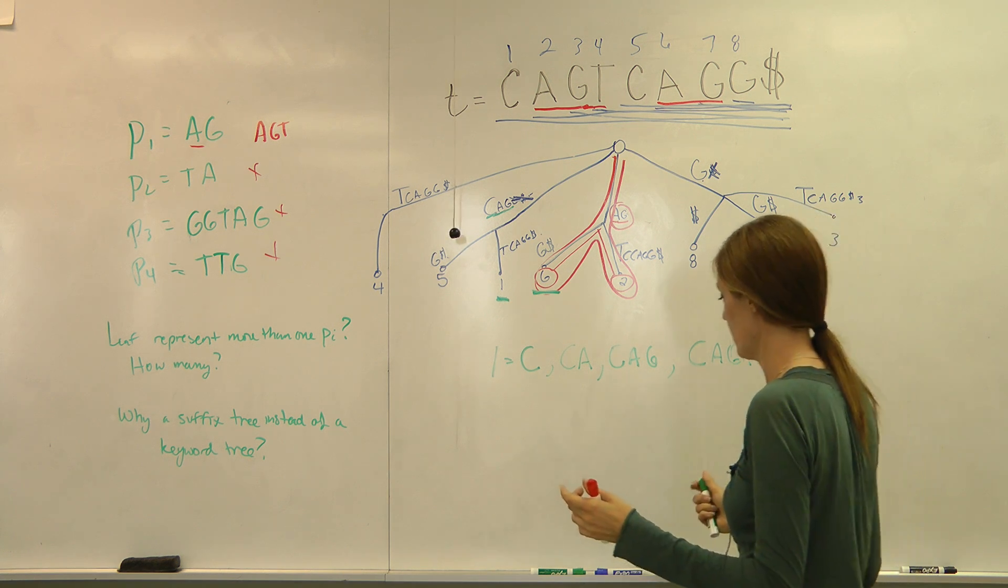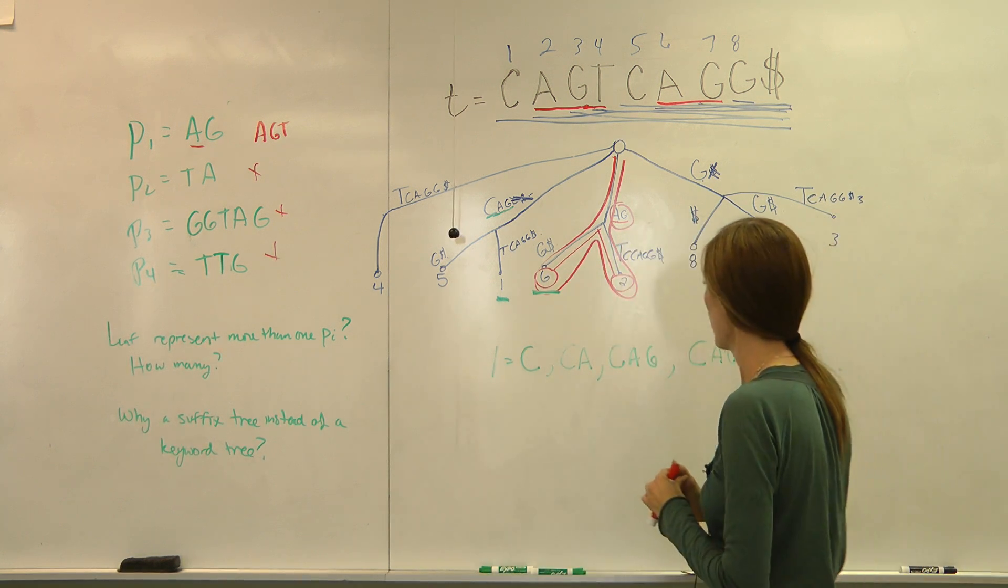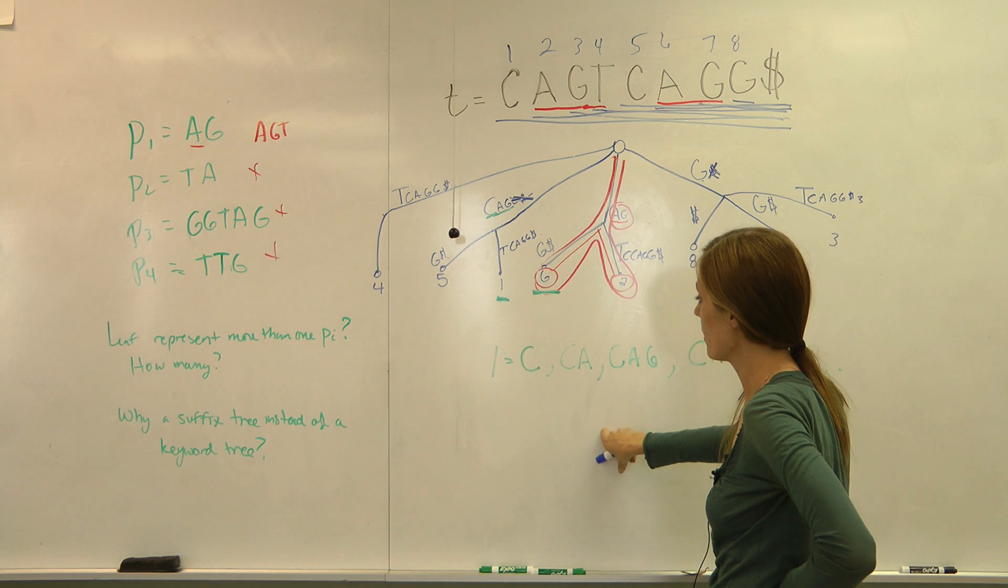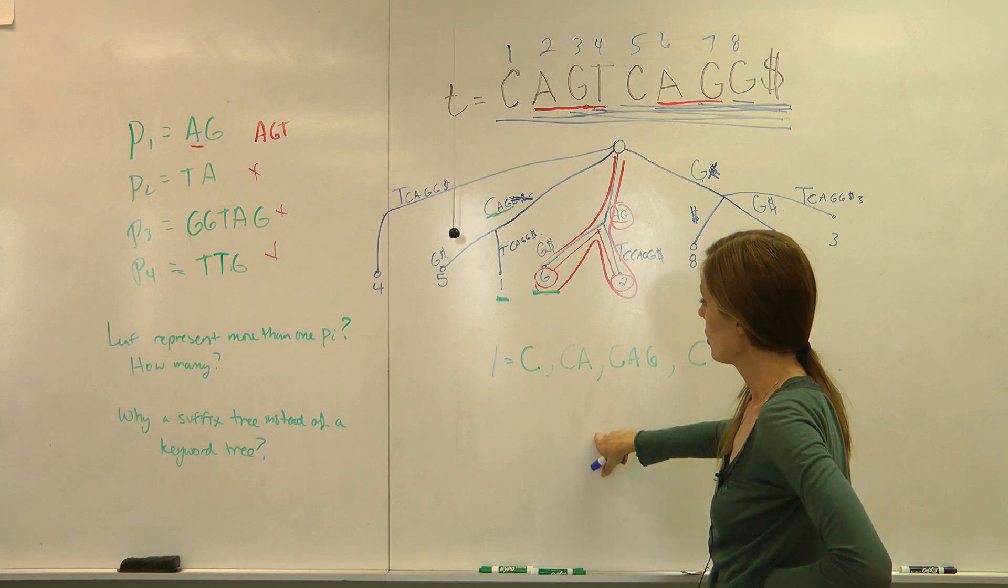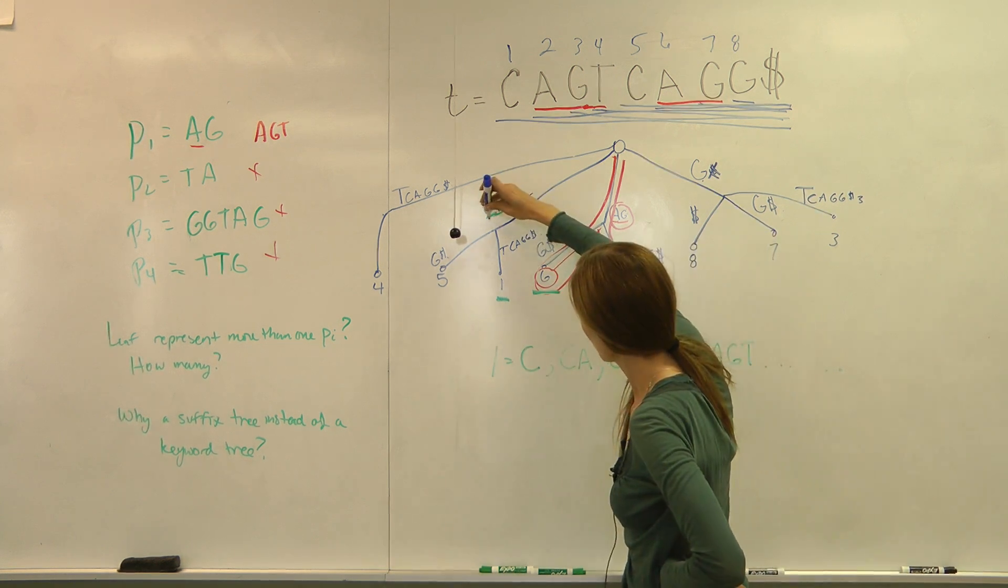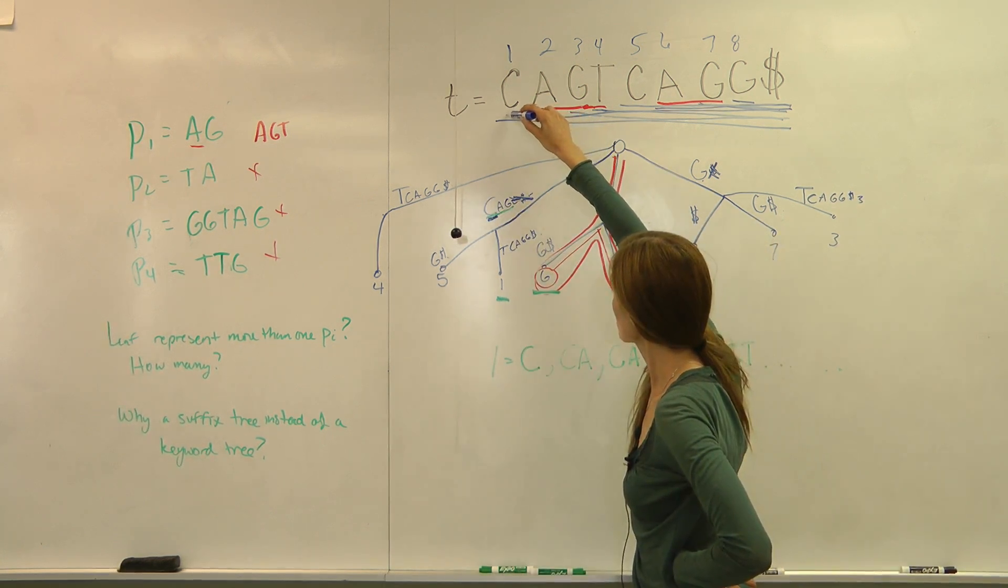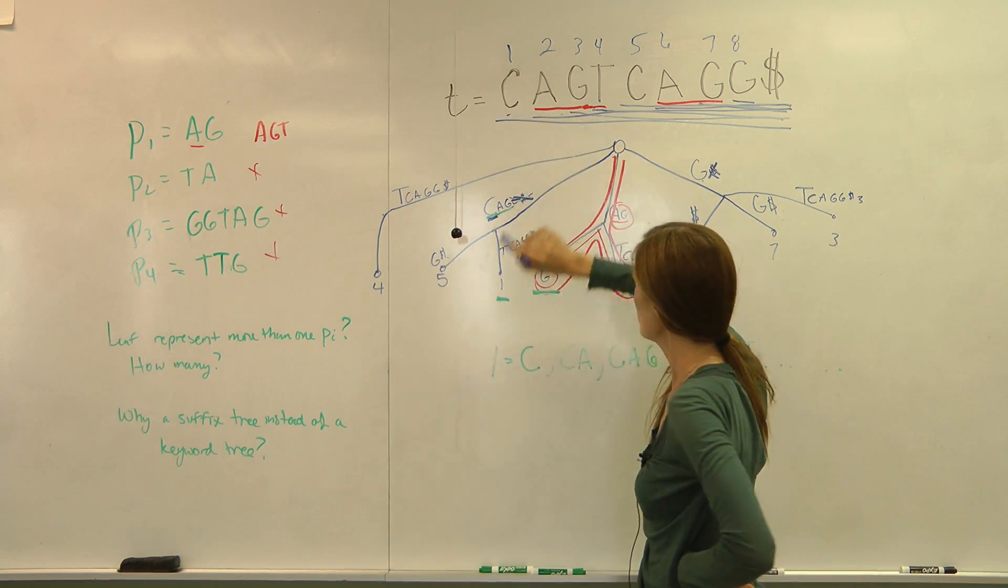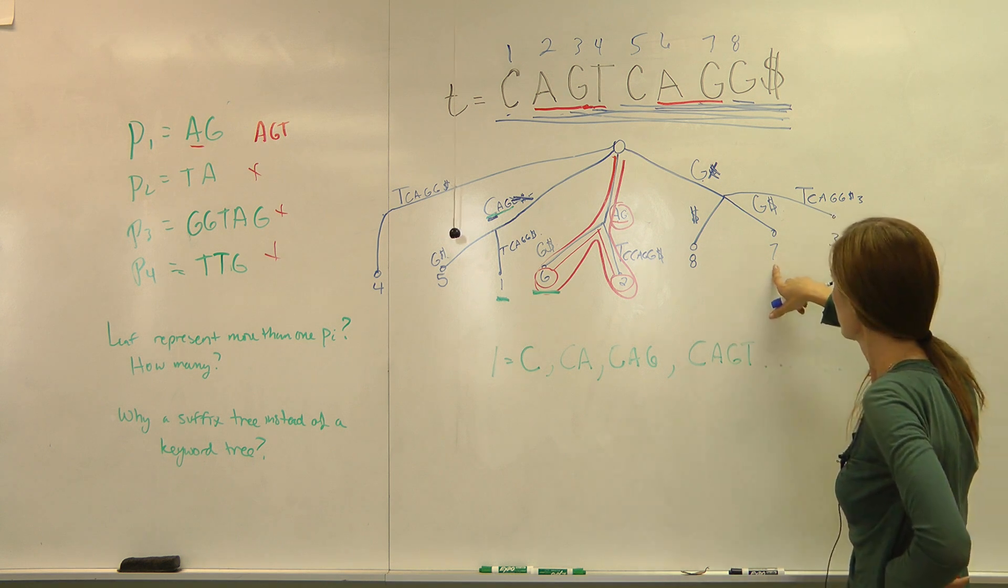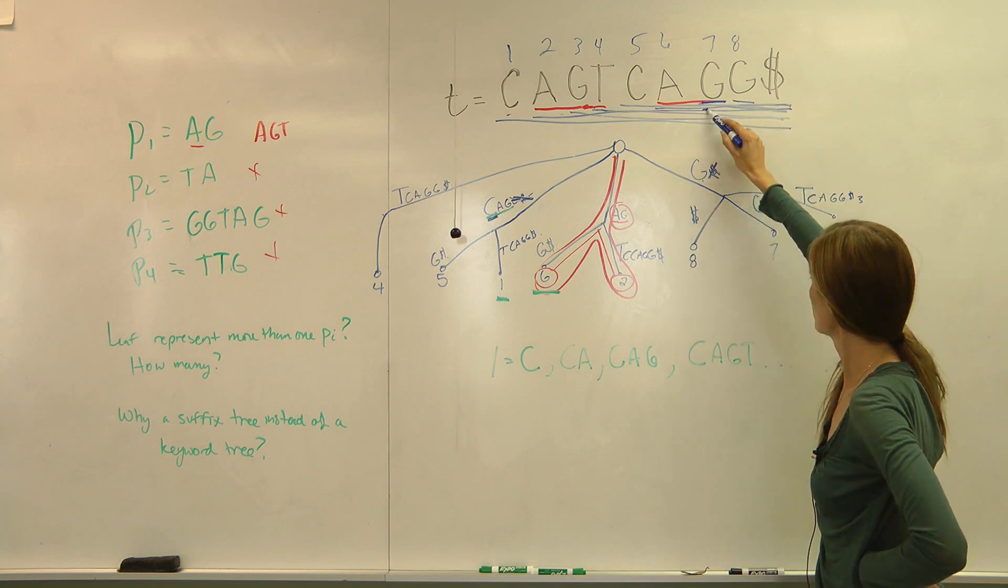But how many is the second part of that question. How many, indeed? Let's look at this one. This is index one. So what can it represent? It could represent everything that starts at index one. So it could represent this. It could represent CA, CAG. It represents everything that starts with that index. Say here's seven. This can represent G. Or it could represent GG. So everything that starts at seven. G, GG.